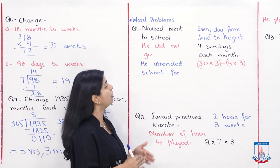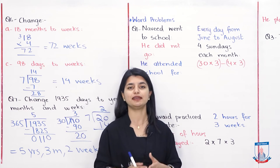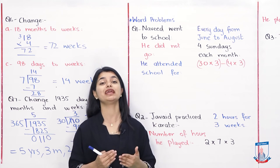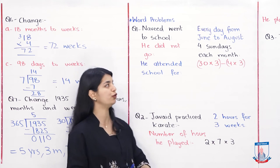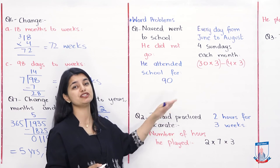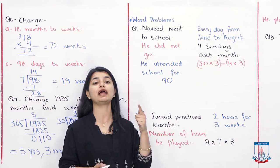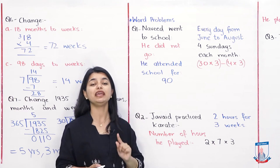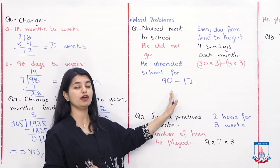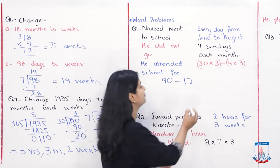Word Problem Question 1: A student went to school every day but did not go on 4 Sundays each month. In June, July, and August — three months — the total days are 30 plus 31 plus 31, which equals 90 days. He missed 4 Sundays each month, so 4 Sundays times 3 months equals 12 days. So 90 minus 12 equals 78.